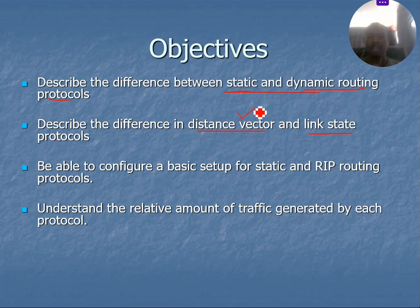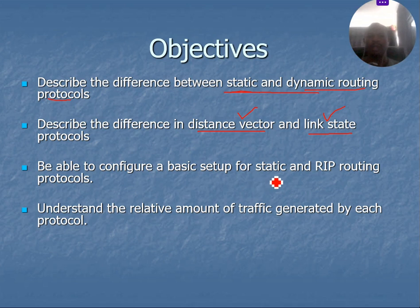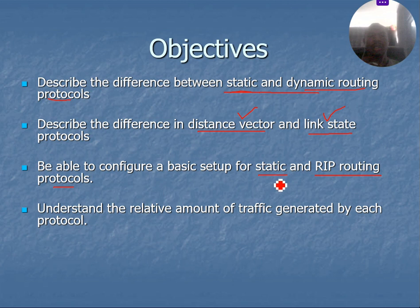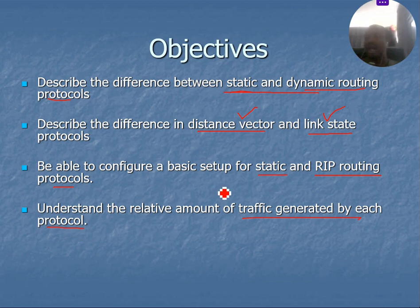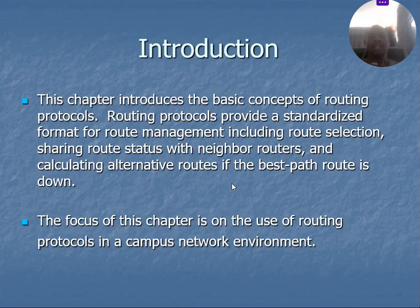The second objective is to know the difference between the two types of dynamic routing protocols: the distance vector routing protocol and the link state routing protocol. The third objective is to be able to configure routing protocols for both static routing and RIP protocols. Another objective is to understand the relative amount of traffic generated by each protocol — its advantages and disadvantages — so we know whether to use it or choose another routing protocol for our networks.